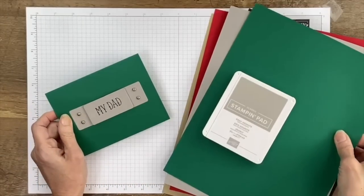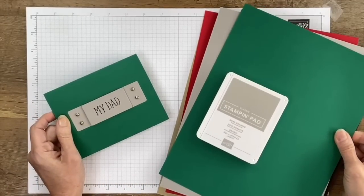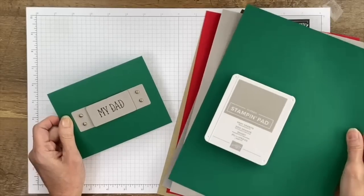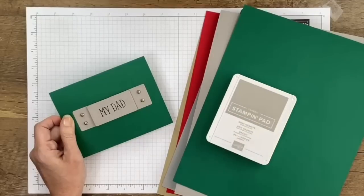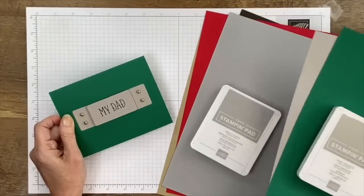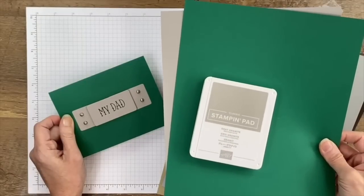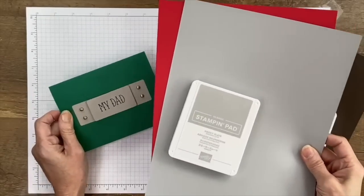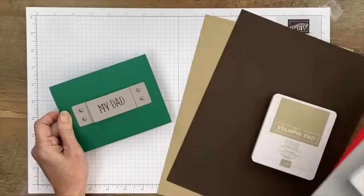You also have options for colors, so if you're giving your card to your dad or your husband or somebody special, you can change up the colors to match their Tackle Box. So I used Shaded Spruce and Gray Granite for my first card here. You could also use Real Red and Smoky Slate.